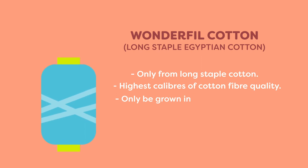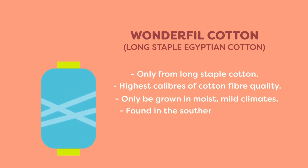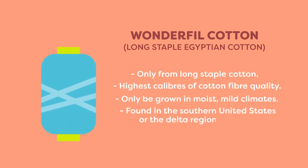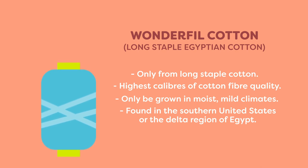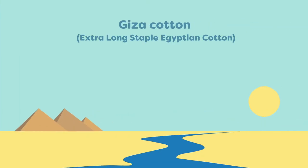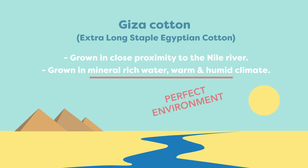This cotton can only be grown in moist, mild climates, a few of which can be found in the southern United States or the delta region of Egypt. Even in Egypt, there is variation in climates. Giza cotton is an extra-long staple Egyptian cotton grown in close proximity to the Nile River, a veritable oasis in the otherwise dry climate. Because of the Nile's mineral-rich water and the region's warm, humid climate, it makes the perfect environment for the highest quality cotton to be grown.